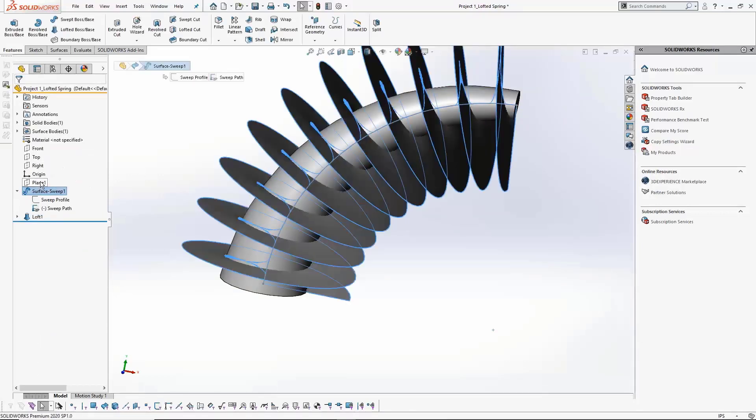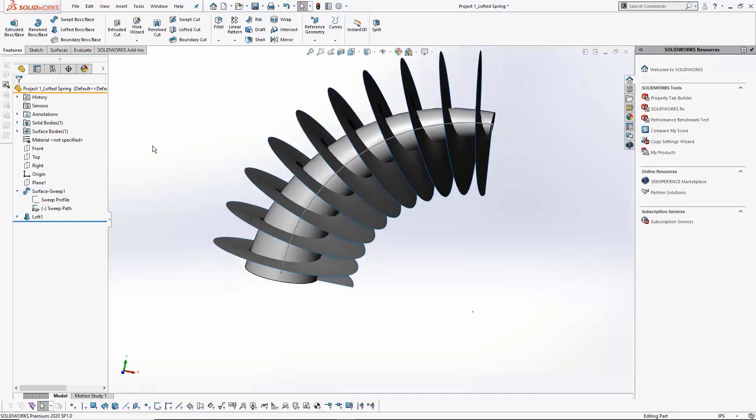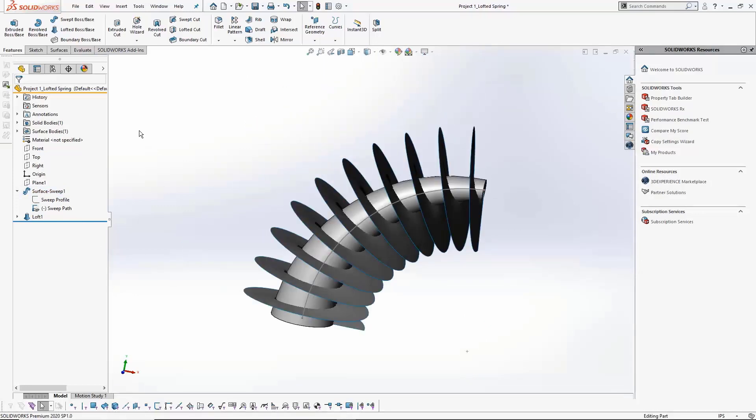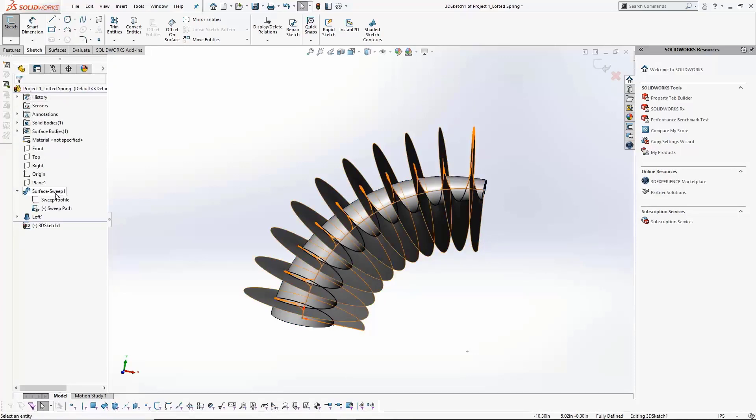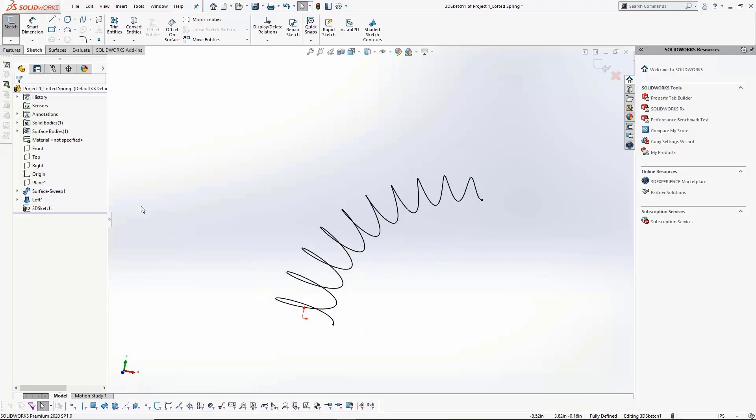The real magic happens when we use the intersecting curves tool. This is a simple tool that allows us to get the exact profile sketch we need for our spring without taking additional clicks. We simply select the two surfaces that we created and the intersection curve tool will then generate a 3D sketch based on the intersection of those two surfaces.